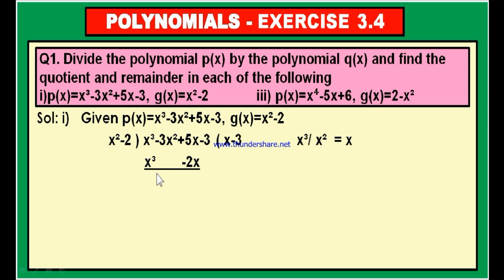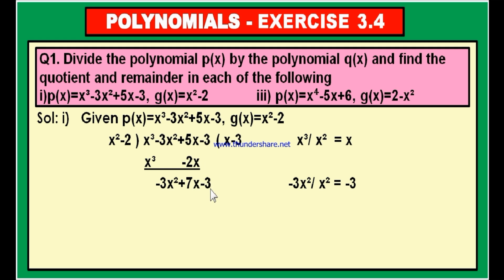Now go for subtraction — the signs are changed. Plus X cube becomes minus X cube, and these cancel out. Write down minus 3X square. Then 5X with sign changed on minus 2X gives plus 2X, so 5X plus 2X is 7X. Write the constant term minus 3 as well. The new dividend is now minus 3X square plus 7X minus 3.